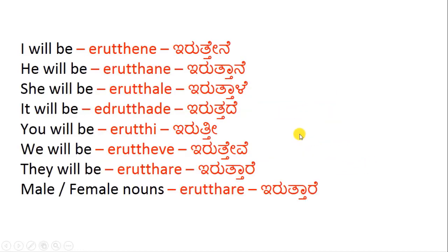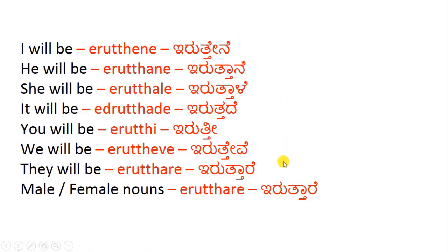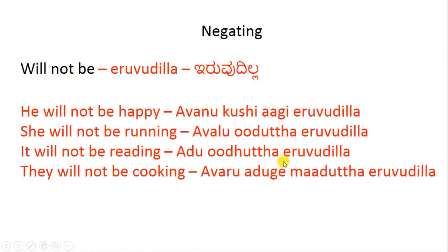In the same way, practice for all pronouns: 'she will be' should end with iruttale, 'it will be' should end with iruttade, and so on. For 'he' you use avanu; for 'she' you use avalu; for 'it' — adu or idu; for 'you' — ninu or nevu; for 'we' — naamu or de; for 'they' — avaru.